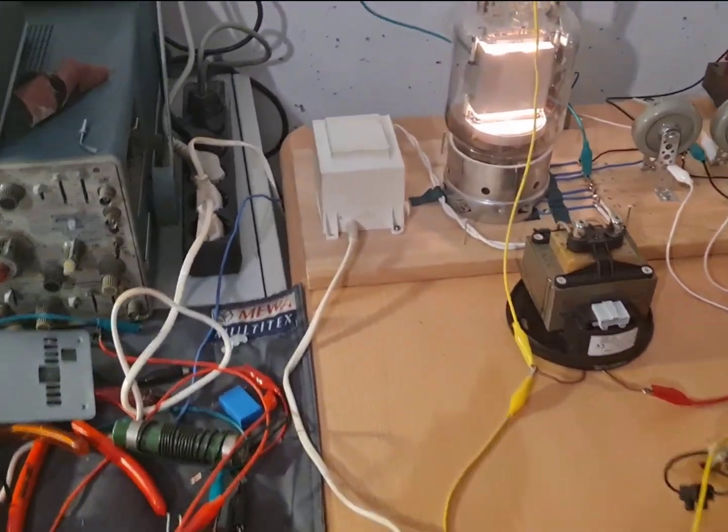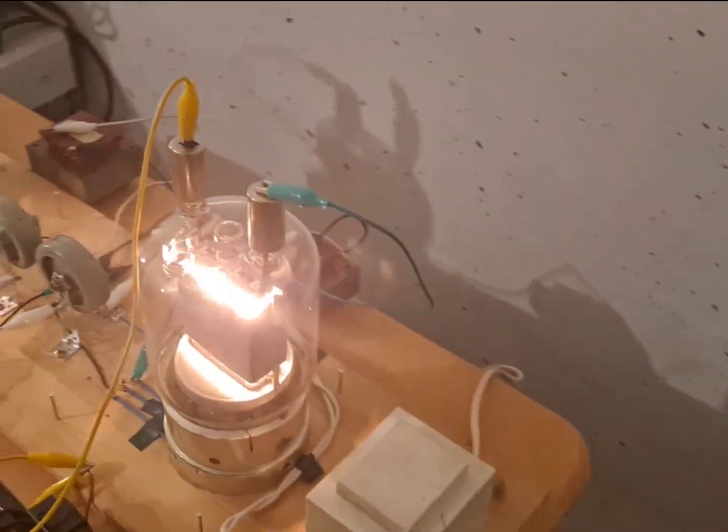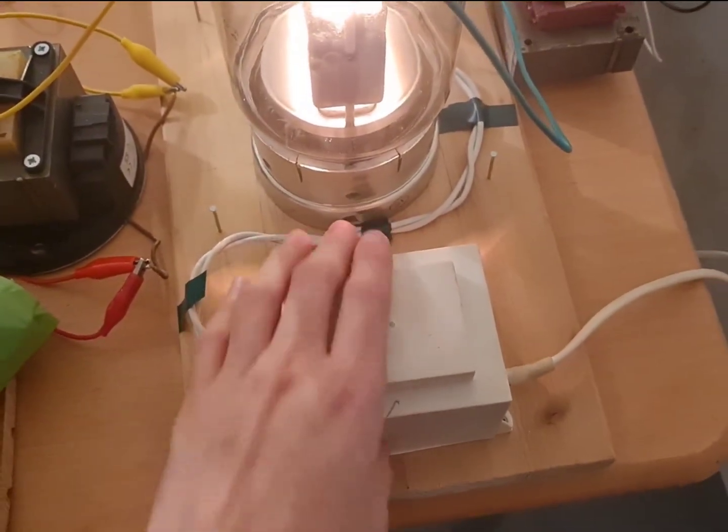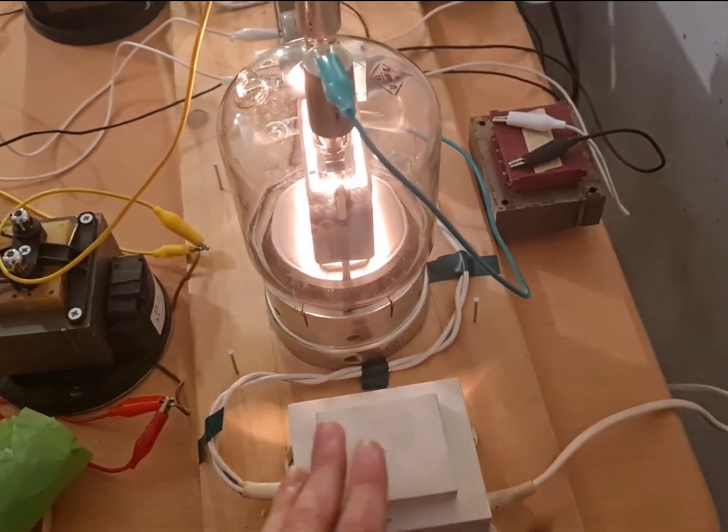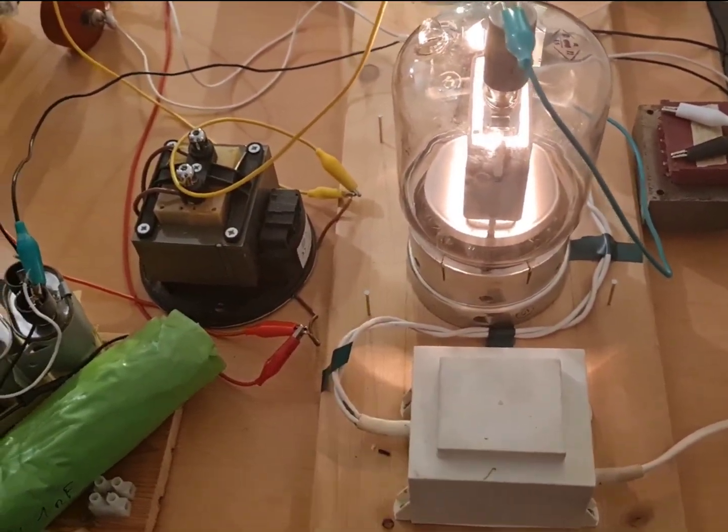As you can see, the filaments of the tubes are powered on. They are actually running at lower voltage. They're only getting about 11.5 volts from these transformers here. In the final version, I plan to step up the voltage going into these transformers to get higher voltage out.